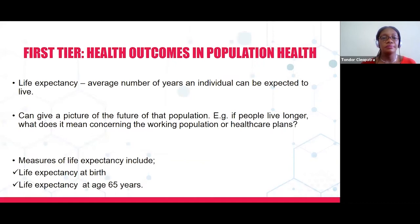Life expectancy is the average number of years an individual can be expected to live. It gives a picture of the future of that population. For example, if people live longer, what does it mean concerning the working population or health care plans? Measures of life expectancy can include life expectancy at birth and life expectancy at age 65.